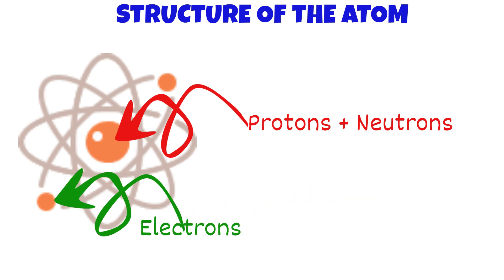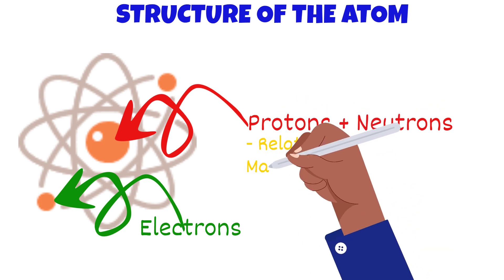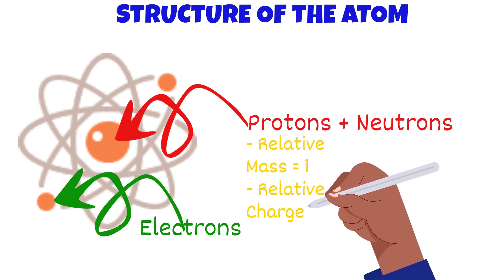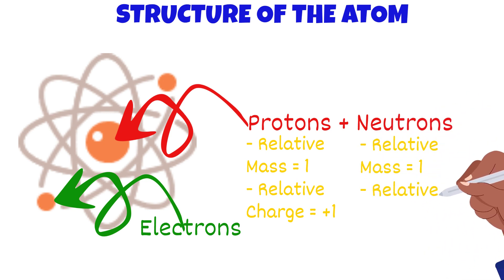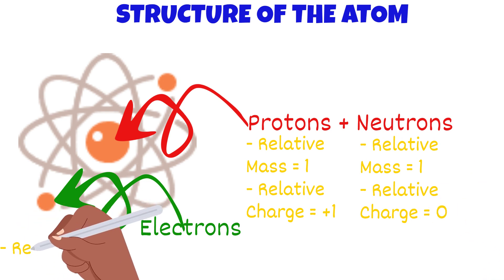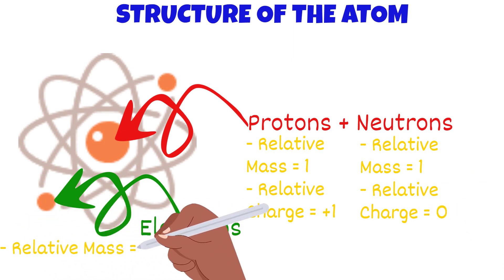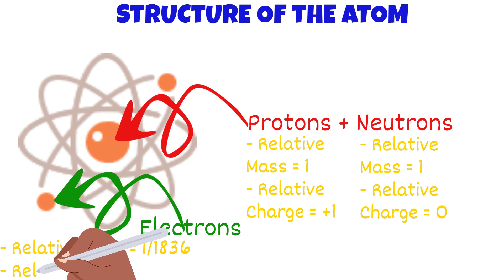The properties of the subatomic particles are as follows. Protons have a relative mass of 1 and a relative charge of plus 1. A neutron also has a relative mass of 1, but since it is neutral, its relative charge is 0. Electrons have a relative mass of 1 over 1836 and a relative charge of minus 1.